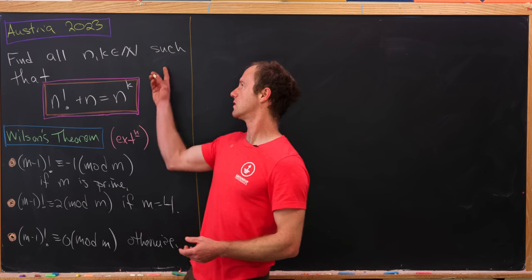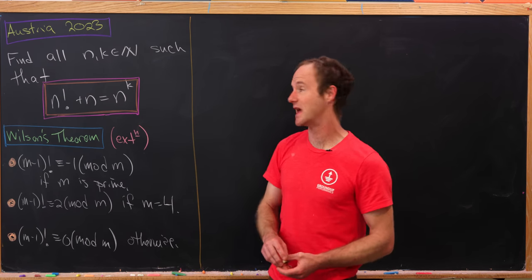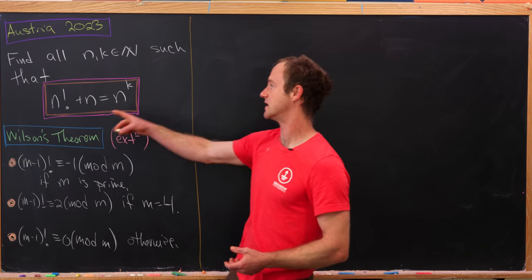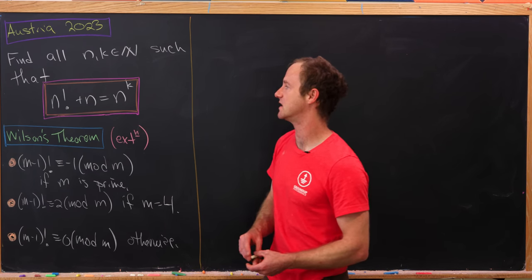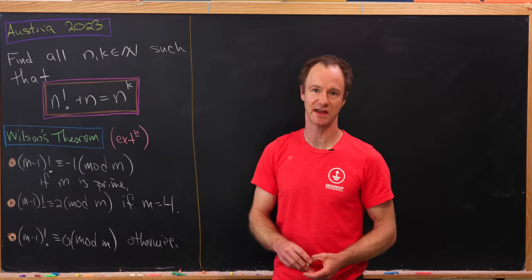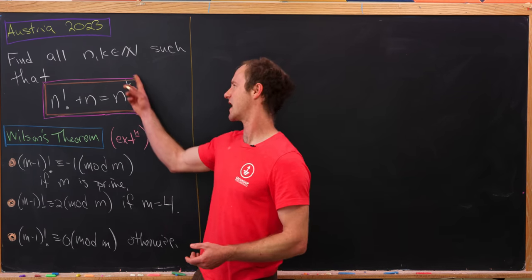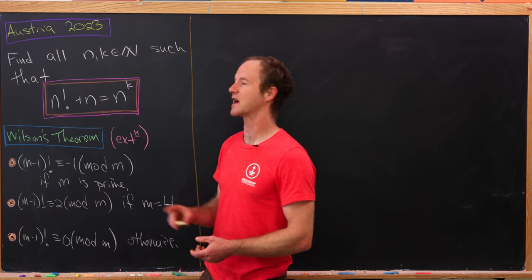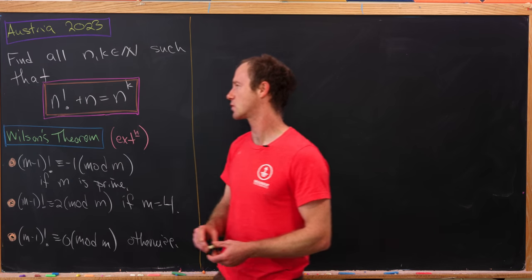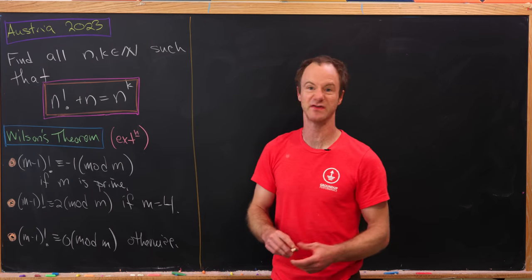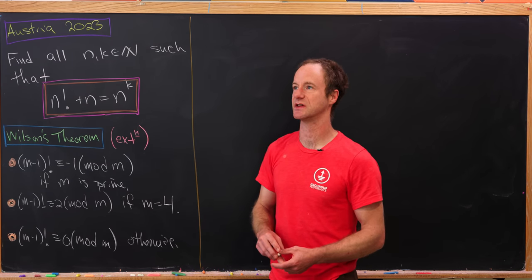Our goal is to find all positive integers n and k satisfying the equation n factorial plus n equals n to the k. We've got exponential action on the right-hand side and factorial action on the left-hand side — that's what makes this interesting.